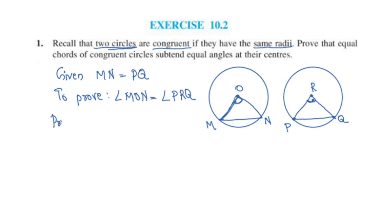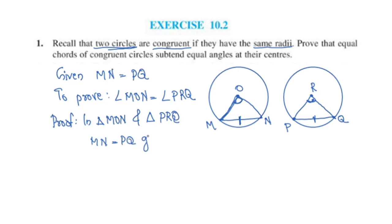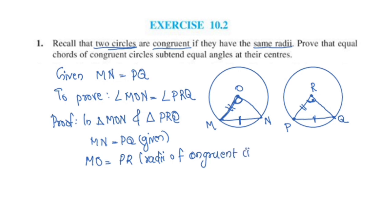In triangle MON and triangle PRQ: MN is equal to PQ. MO is equal to PR — these are radii of congruent circles. NO is equal to QR — these are also radii of congruent circles.